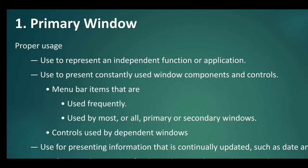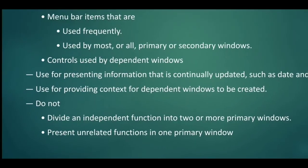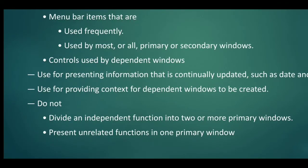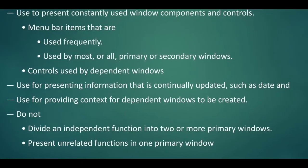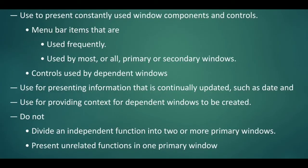The primary window also provides controls used by independent windows. It is used for presenting information that is continually updated, such as date and time. If any window is presenting information that is continually updating, the primary window should be used for that kind of work.